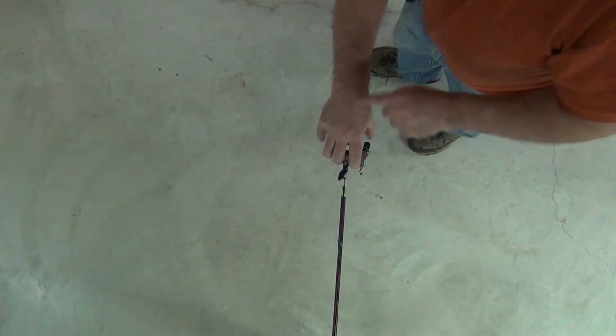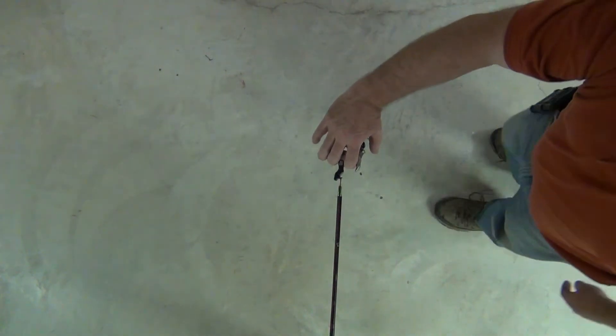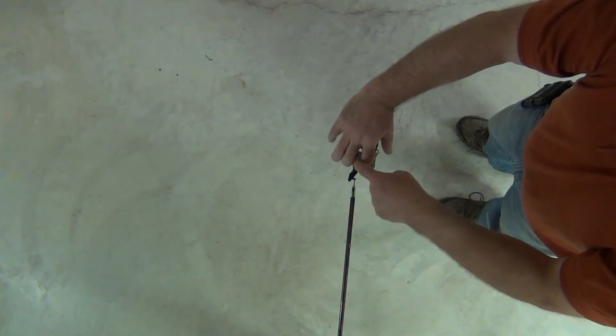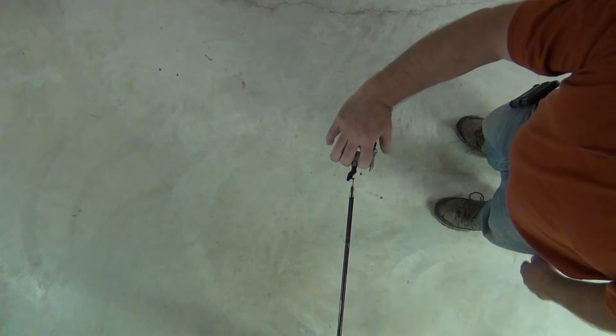What happens if my forearm is not in line with the bowstring? Well, absolutely nothing. It's still a straight line through the release, through the hook, through the D-loop, to the string, up to the cams.